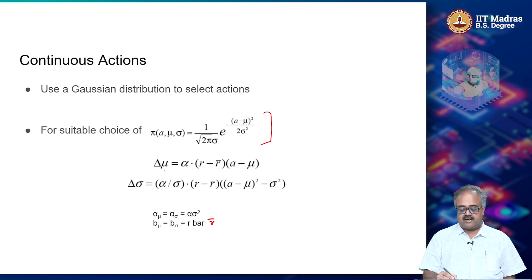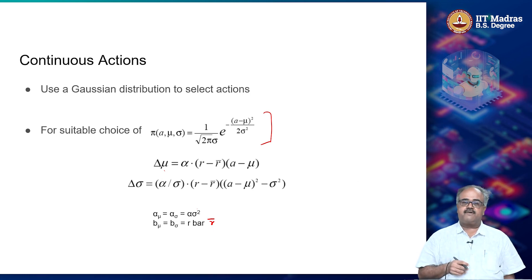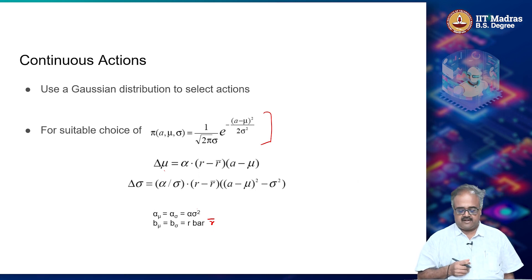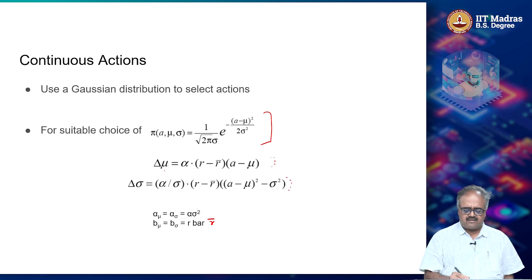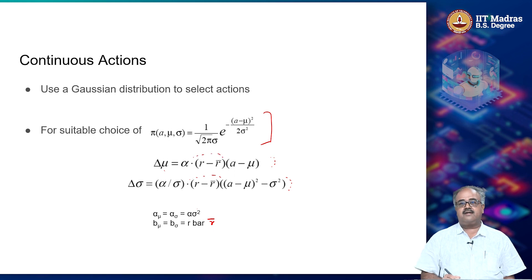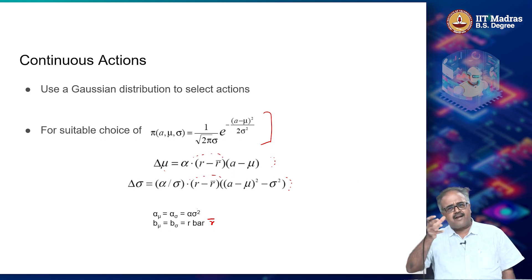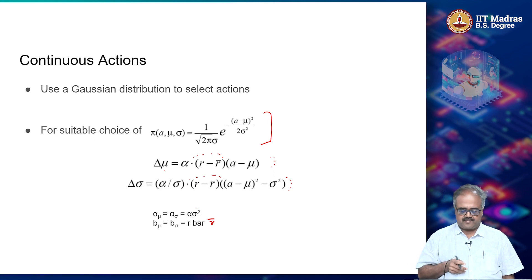This gives the update rule when using continuous actions. If you remember, we kept saying we will use a different error function for updating the parameters — not the TD error used earlier. It turns out that in the full RL setting, this expression will start looking like the TD error, and we will see that in a bit.